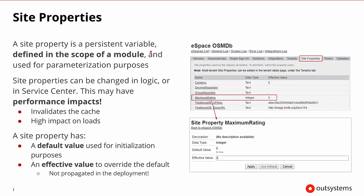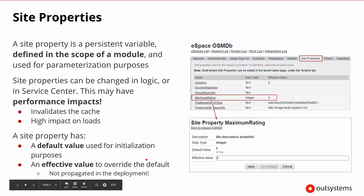A site property is a persistent value. It's defined inside of the scope of the module and it's used for parameterization purposes. Site properties can be changed inside of the logic or code, or can be changed directly from Service Center. But changing this at runtime has a performance impact — it will invalidate the cache where this is being stored, and it can have a high impact on the load of the overall server.